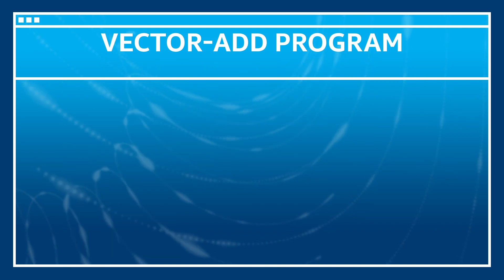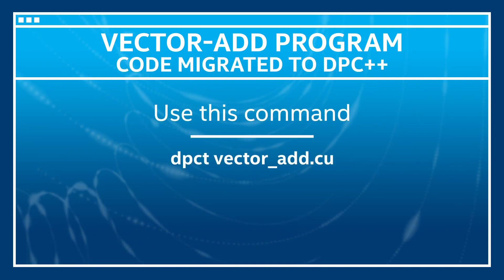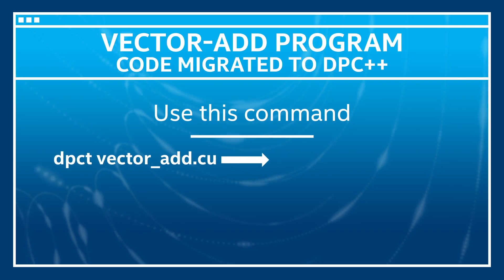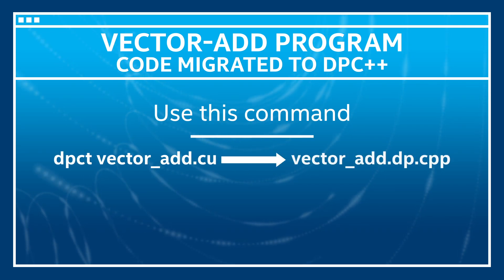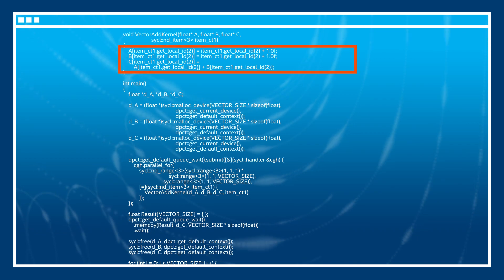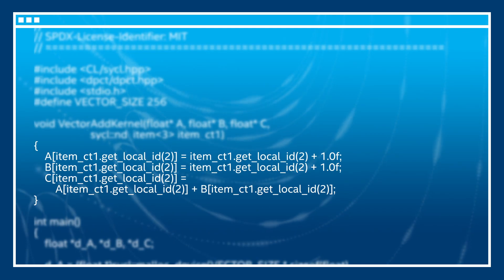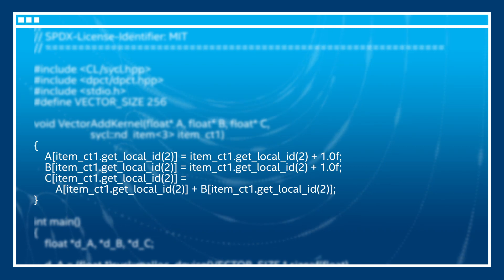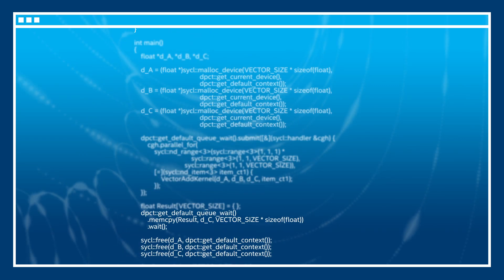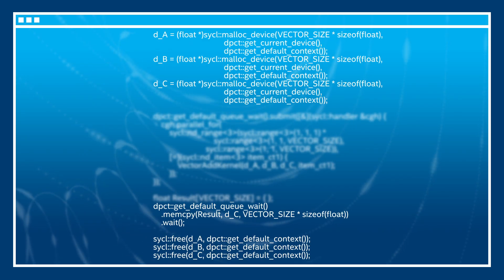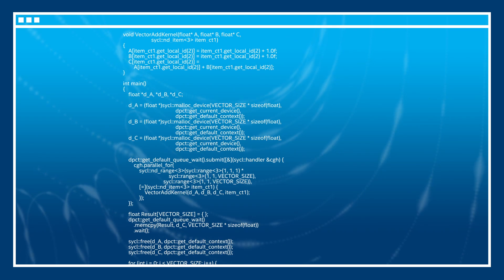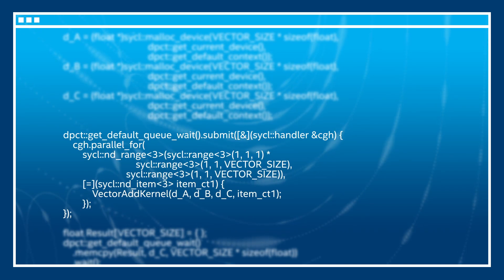Using a simple command line of the Intel DPC++ compatibility tool followed by the source file name, the code is migrated to DPC++. We omitted some code here to give you a brief overview. Iteration space enumeration thread idx.x is migrated to the work item and the get_local_id of the work item. The CUDA malloc, memcopy, and free APIs are migrated to DPC++ APIs for memory operations. The SYCL call code is auto-generated.